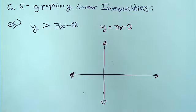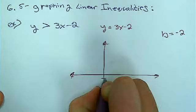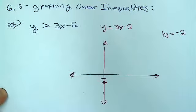The y-intercept is? All right, so it's going to intersect at negative 2. So here's negative 2. And then what's the slope? 3 over 1.